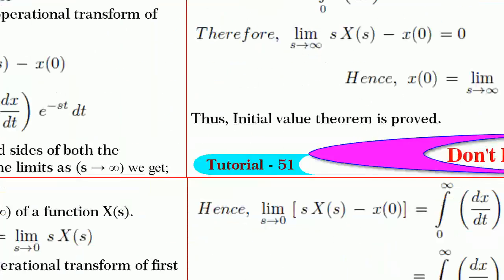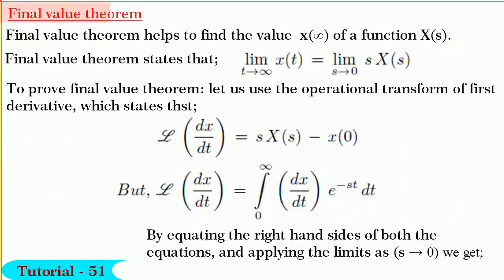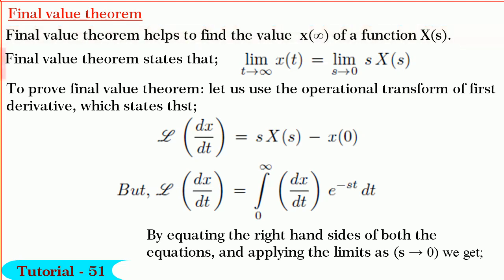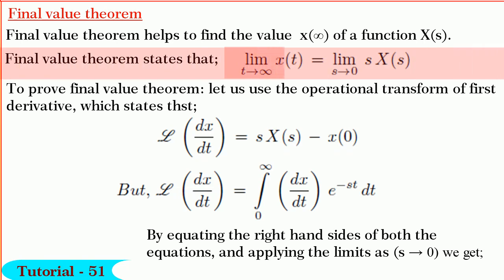Next, we shall consider the final value theorem. We know that the final value theorem helps to find the value x(infinity) of a function X(s). It states that the limit of x(t) as t tends to infinity is equal to the limit of sX(s) as s tends to 0.